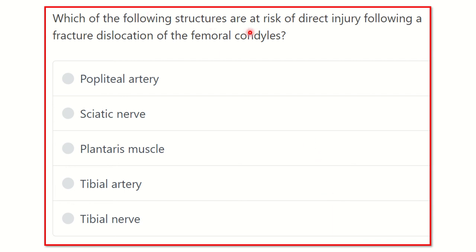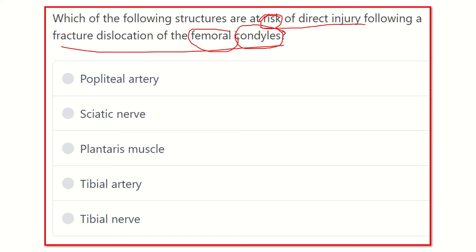Which of the following structures are at risk of direct injury following a fracture-dislocation of the femoral condyle? Here 'direct injury' means a structure which lies very close to the femoral condyle, and when fracture-dislocation occurs, it will damage a closely related structure. So we have to find a structure that is very close to the femoral condyle.